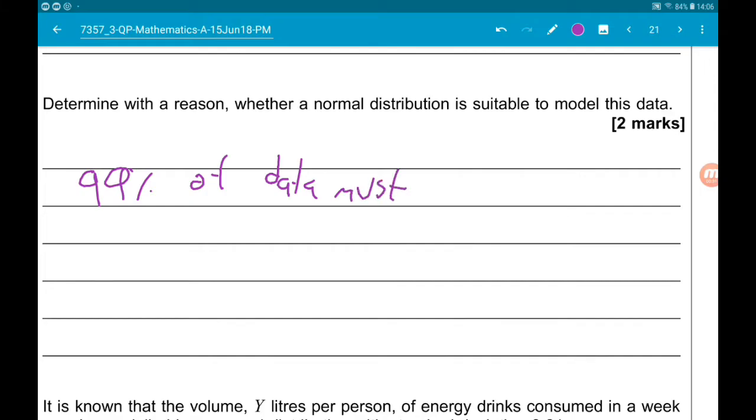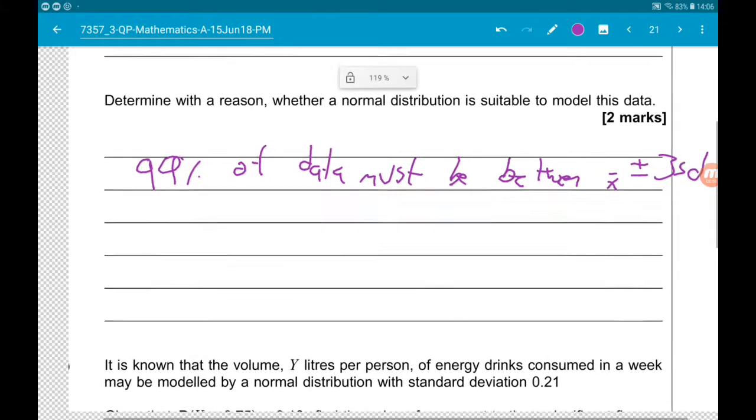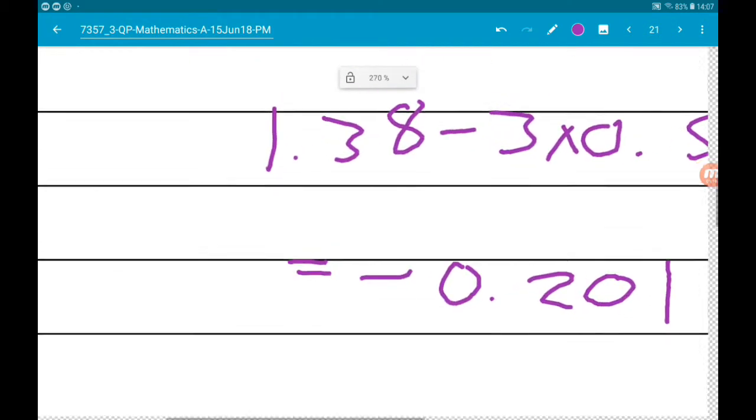Remember that 99% of the data must be between the mean, so X bar plus or minus three standard deviations. If we try to do 1.38 minus three times 0.527, we get a negative number. I get minus 0.201.